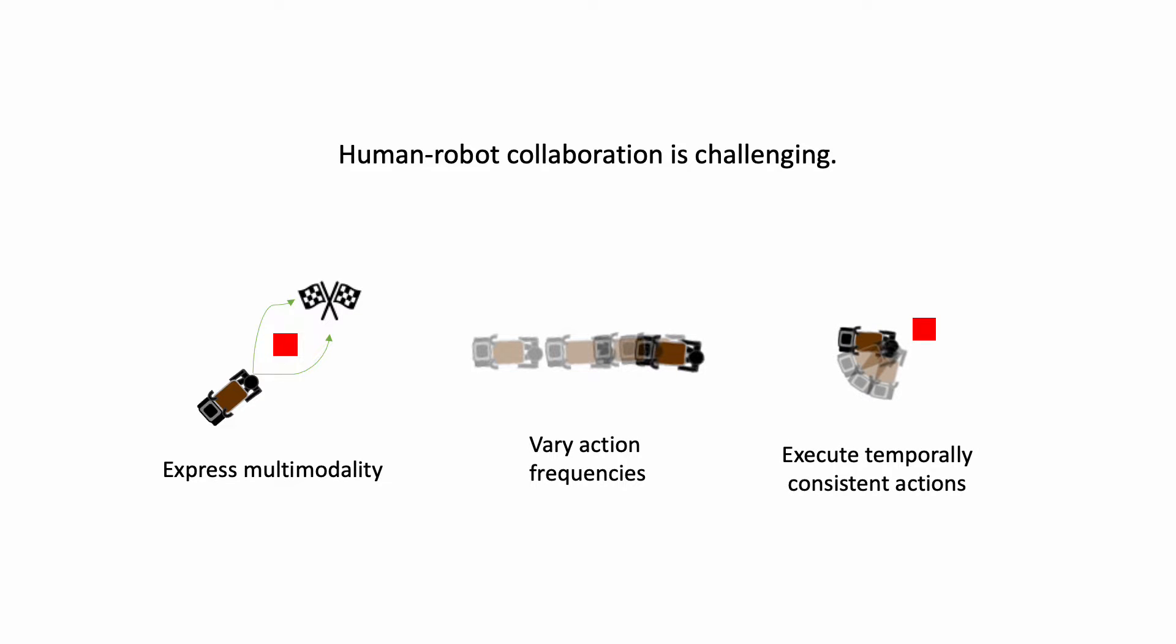Human-robot collaboration requires sharing task representations, precision, and real-time mutual adaptation. To this end, robots must be able to express multi-modality, execute actions on a wide range of frequencies such as impulses or constant forces, and act in a temporally consistent manner.